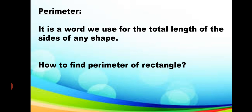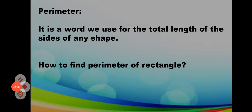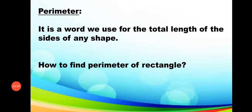The shape can be a triangle, a rectangle — any shape. The total length of all the sides is the perimeter. So let's start our work, which is to find the perimeter of a rectangle.